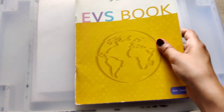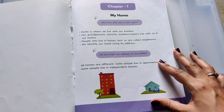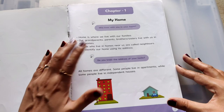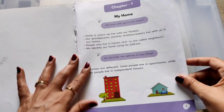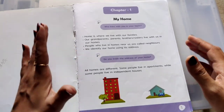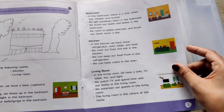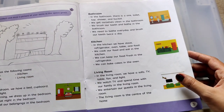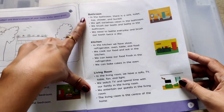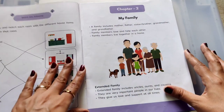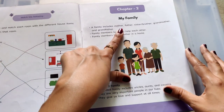Now I'll show you the EVS book for Term 1. This is the EVS book — it is chapter-wise. This is Chapter 1: My Home. As you can see, a very simple and easy explanation is given. This is the My Home chapter — explanation of the rooms: bathroom, kitchen, living room. Then a Match the Following worksheet is given. Then Chapter 2: My Family.